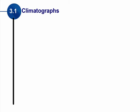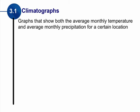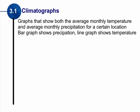When we're talking about climate, we're often concerned about two major components: temperature and precipitation. A climatograph is a graph that can show both the monthly temperature and precipitation for a certain area on earth — this might be a large area or something very small. When looking at a climatograph, the bar graph shows precipitation, the amount of moisture, whereas the line graph shows temperature.